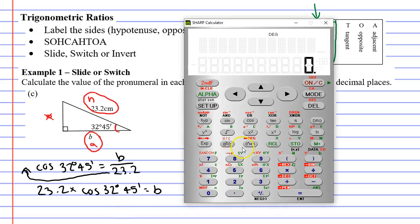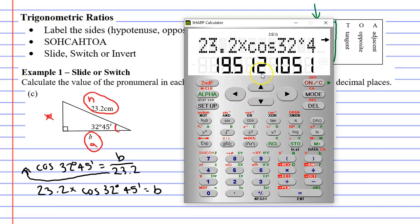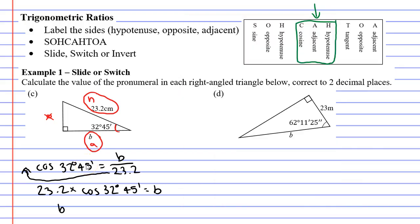So we bring up our calculator and type 23.2 times cos of 32 degrees, using the DMS button for degrees, 45 minutes, using the DMS button again, equals. And we get 19.51. B equals 19.51, correct to two decimal places. We'll put that in centimetres.